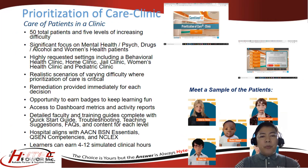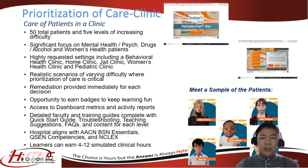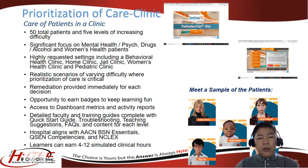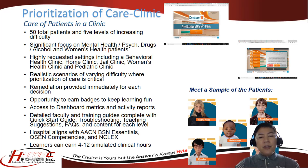Another module is prioritization of care in the clinic setting. It has 50 total patients and five levels of increasing difficulty, with significant focus on mental health or psych, drugs or alcohol, and women's health patients. Highly requested settings include a behavioral health clinic, home clinic, chill clinic, women's health clinic, and pediatric clinic, providing a wide variety of clinical experiences. Realistic scenarios emphasize prioritization of care, and learners can earn 4 to 12 simulated clinical hours.